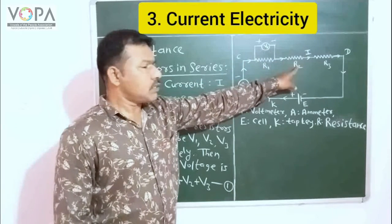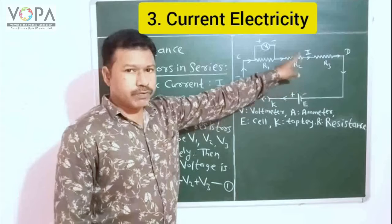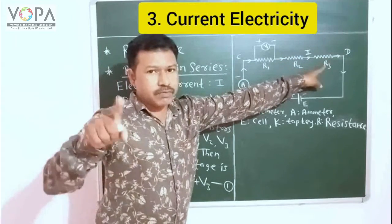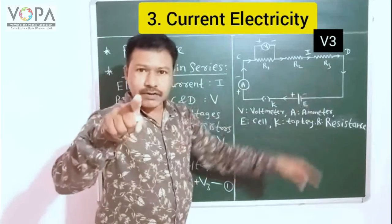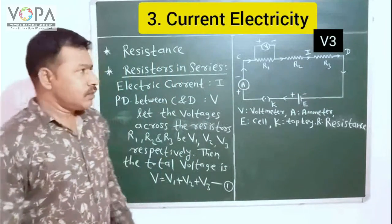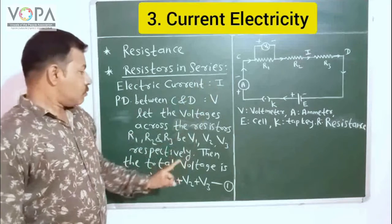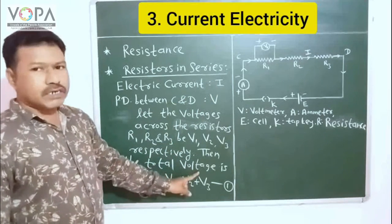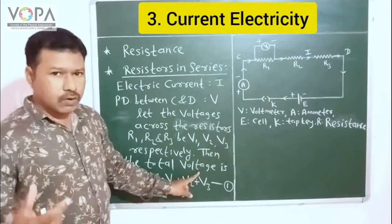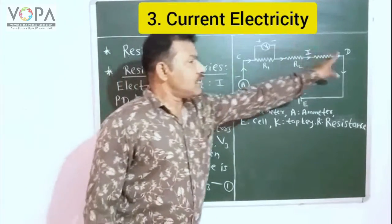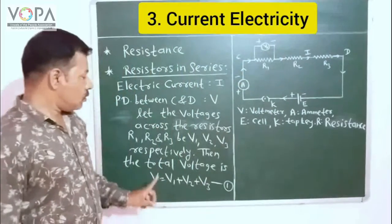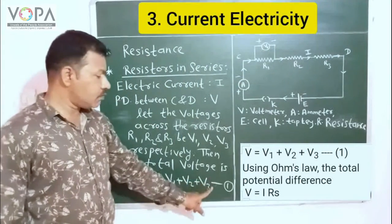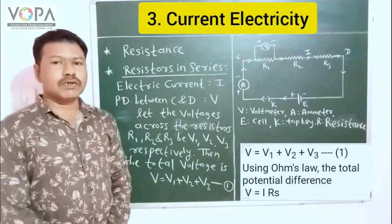Let the potential difference across resistor R1 be V1, the potential difference across resistor R2 be V2, and the potential difference across resistor R3 be V3. So the total potential difference, or the total voltage, across the points C and D is V = V1 + V2 + V3. Call this equation number 1.